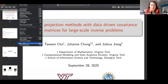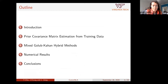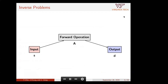Our second talk comes from Taiwan Cho, who is a PhD student at Virginia Tech. Taiwan will be talking about hybrid projection methods with data-driven covariance matrices for large-scale inverse problems.